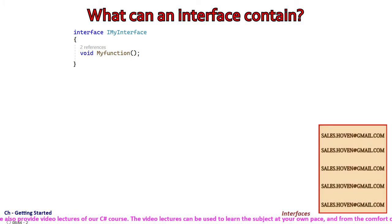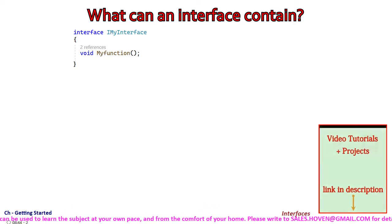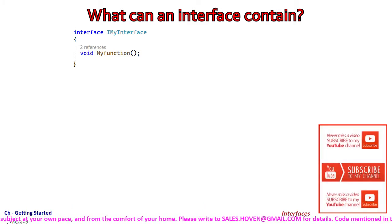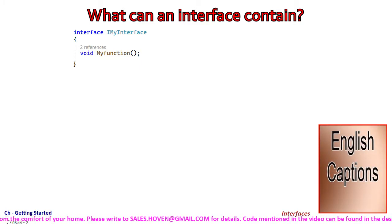This interface declares a function without giving its body. C-sharp compiler treats this function as public, so we do not have to specifically mark it as public. The function doesn't define its body. It is therefore compulsory for an implementing class to provide the body for this function.